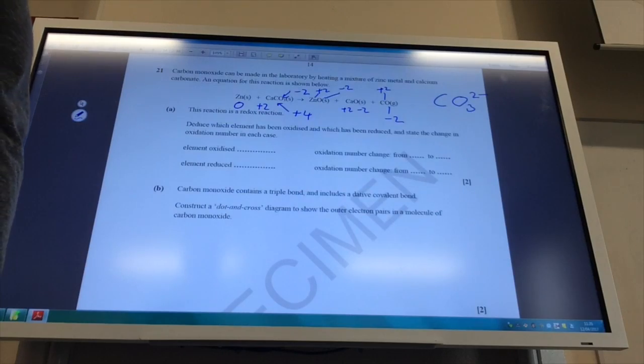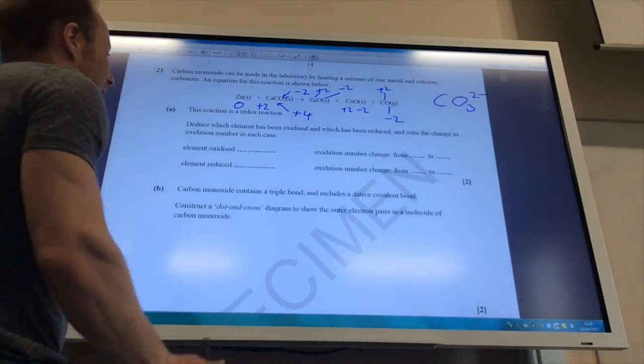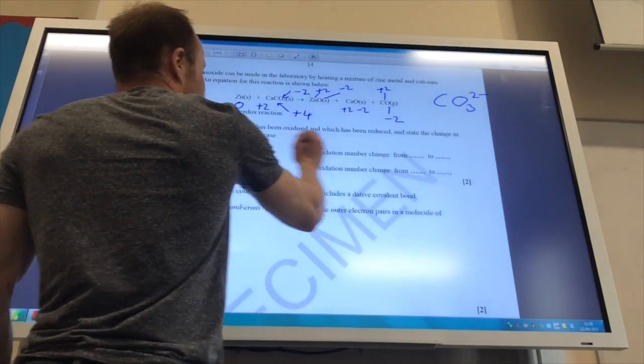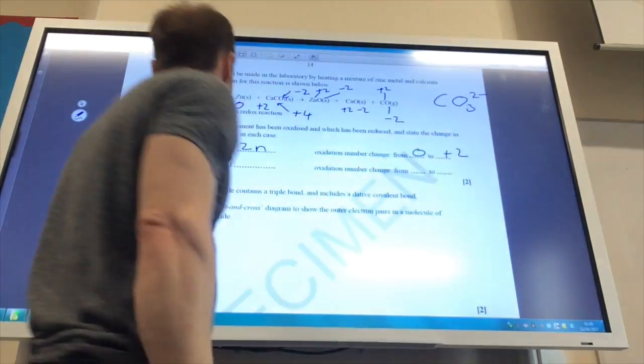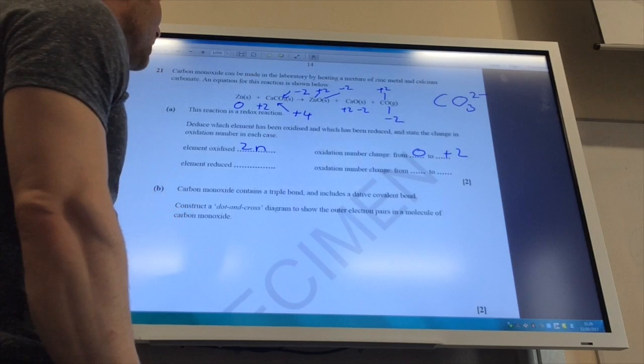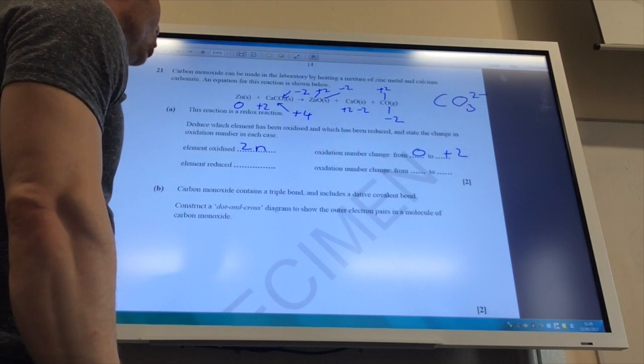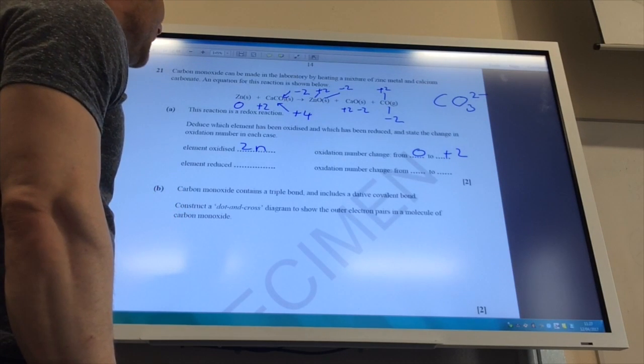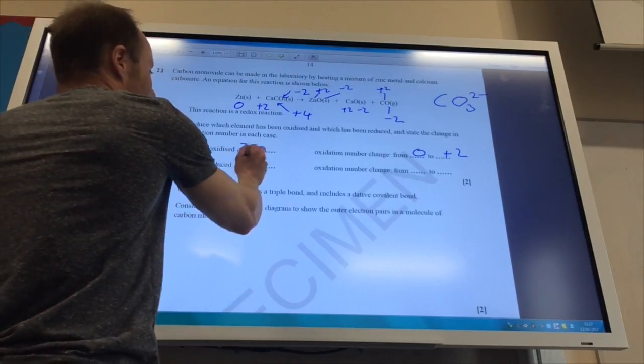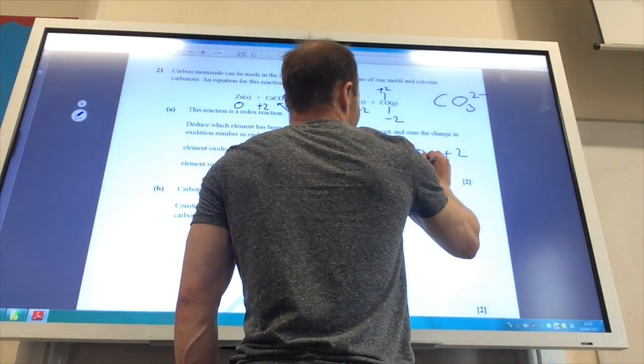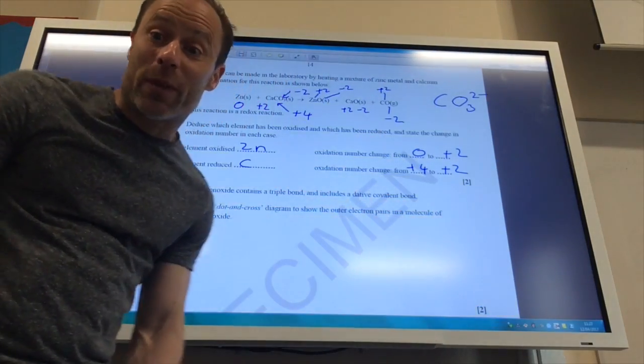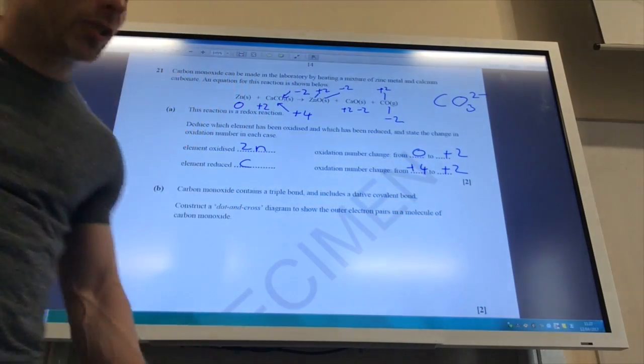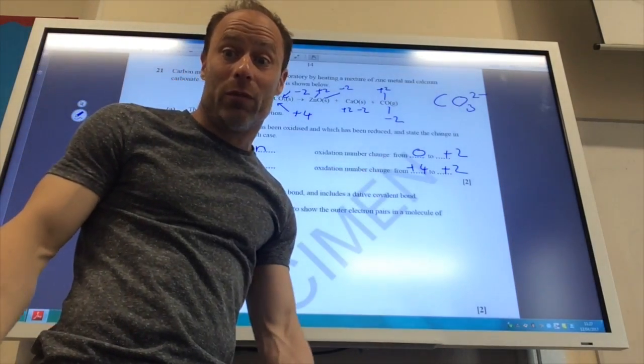So which one's oxidized? Well, it's looking like it's going to be zinc, because zinc has gone from 0 to +2. What element has been reduced? That is looking to me like carbon, because it has gone from +4 to +2 here. Don't forget to put your pluses in as well. So don't just put 4, put +4.